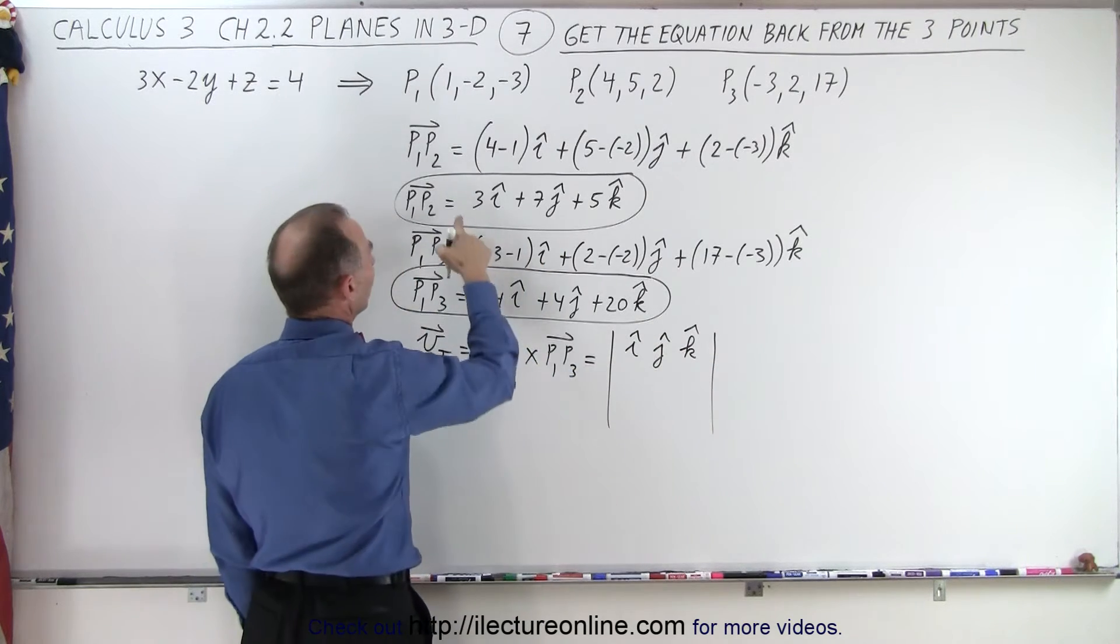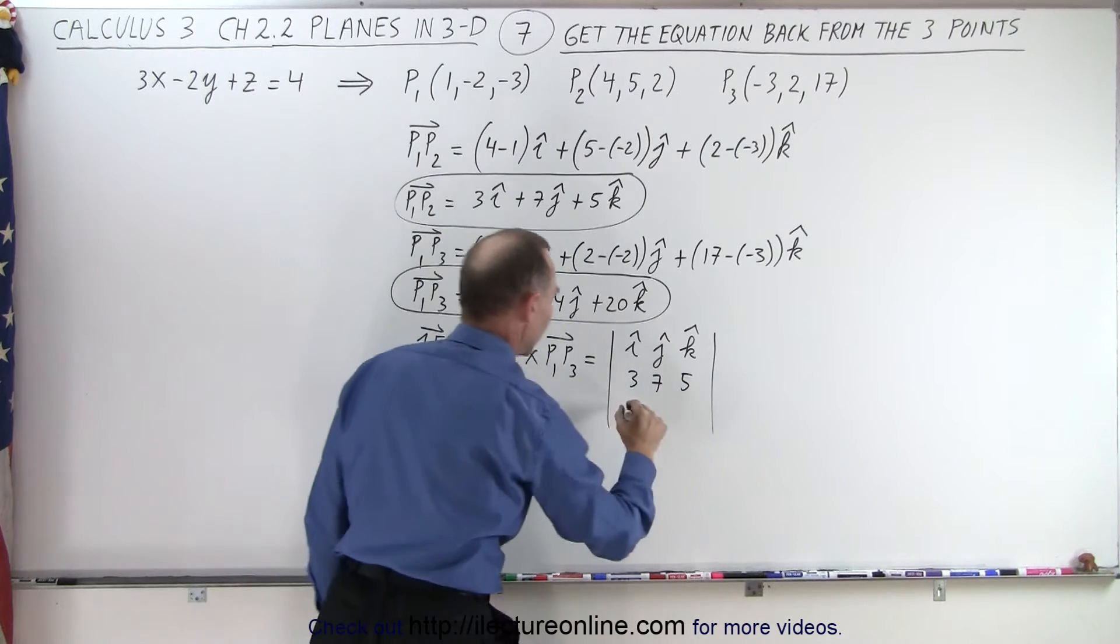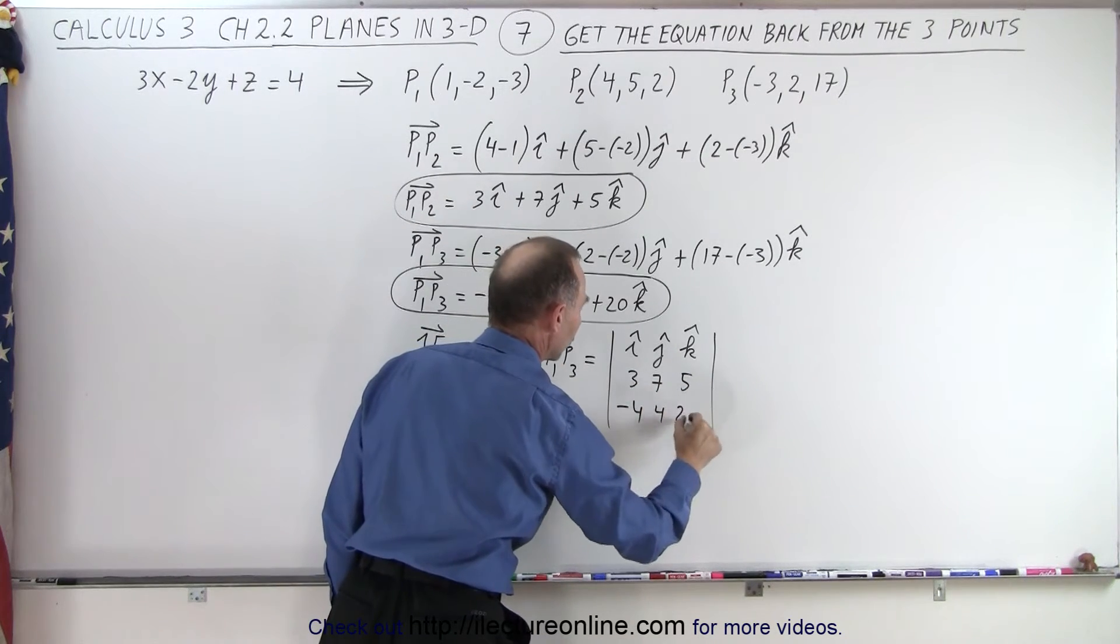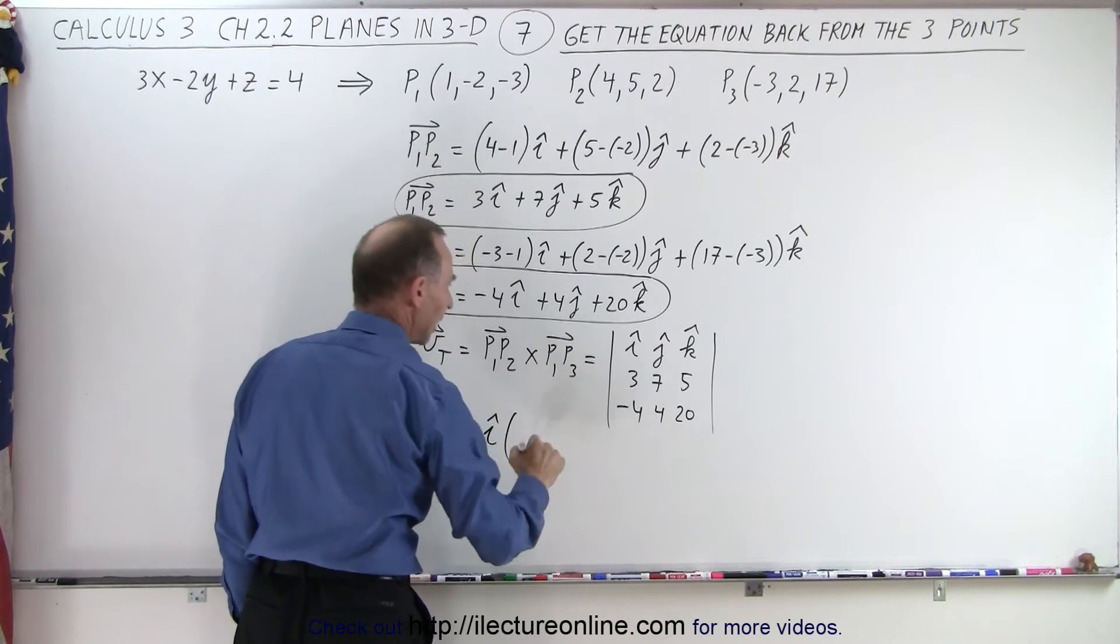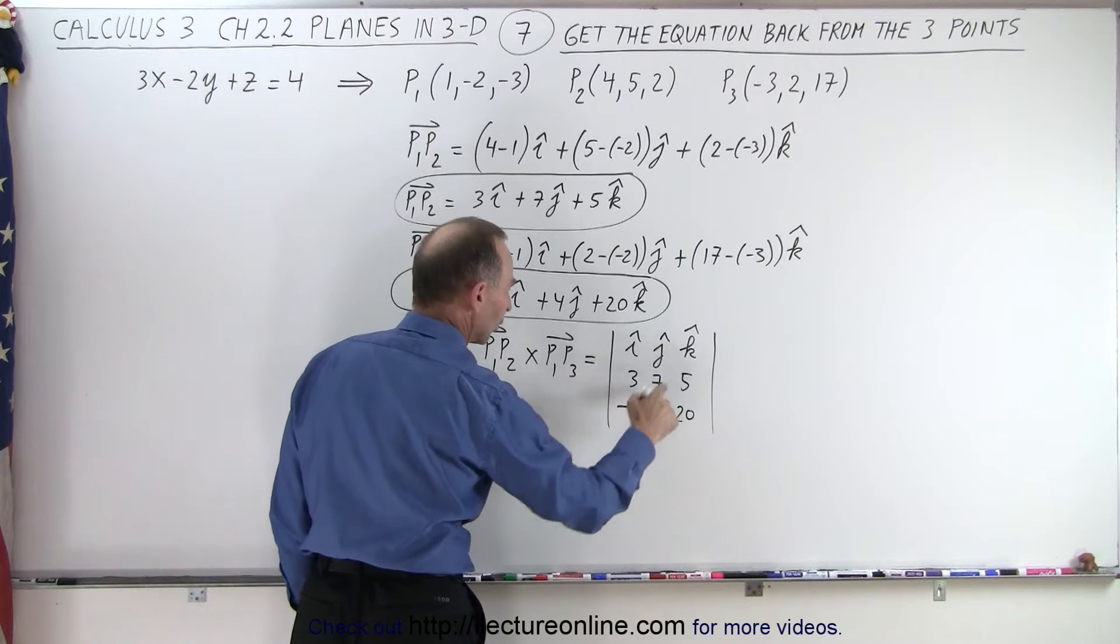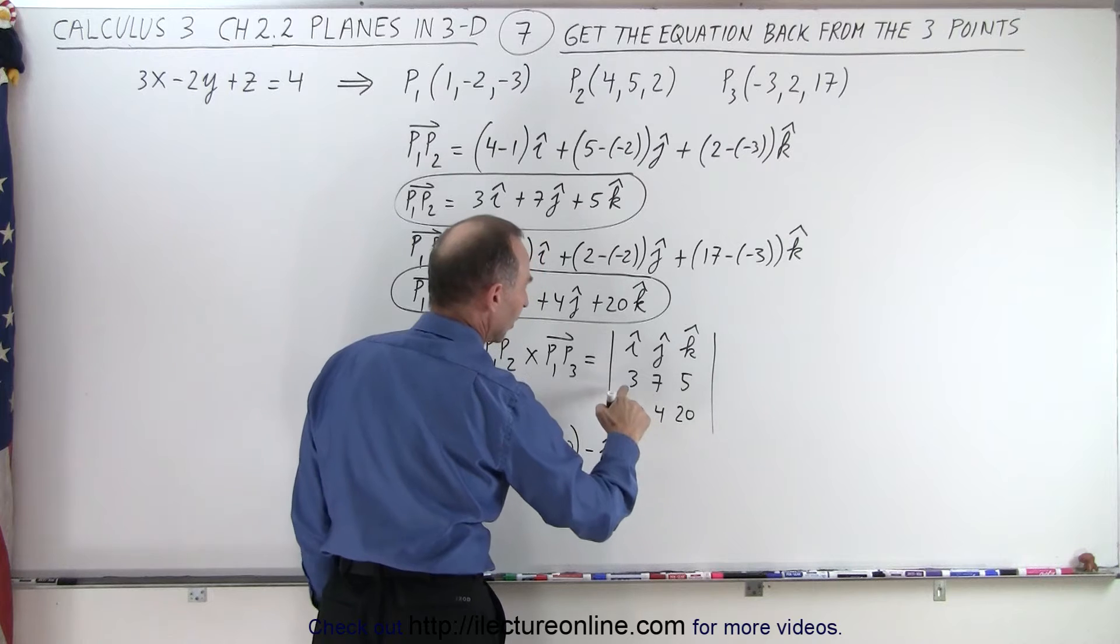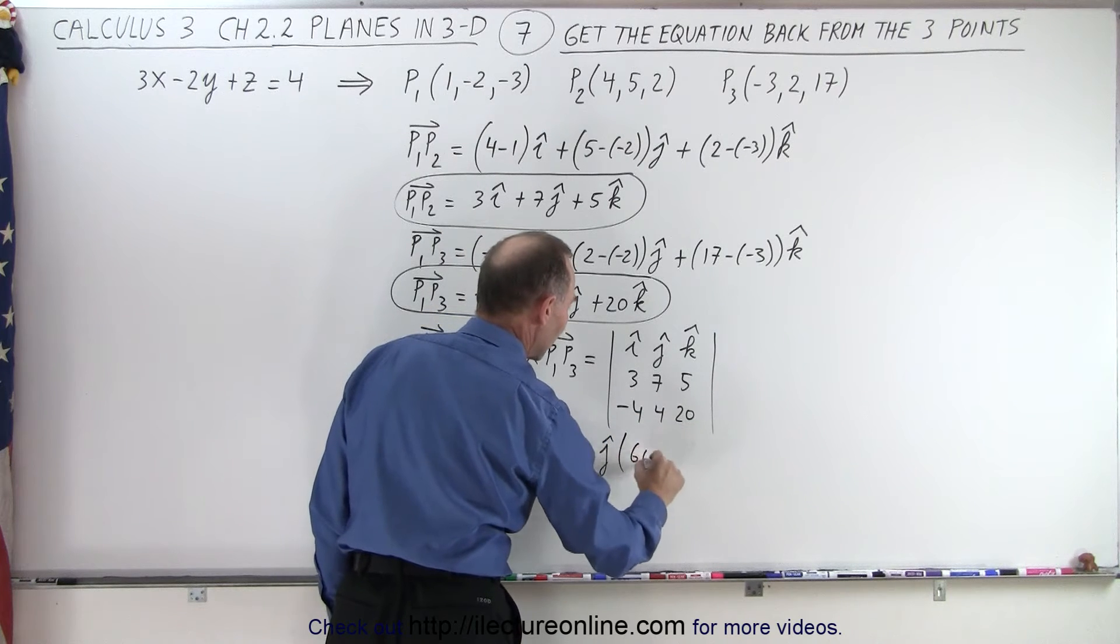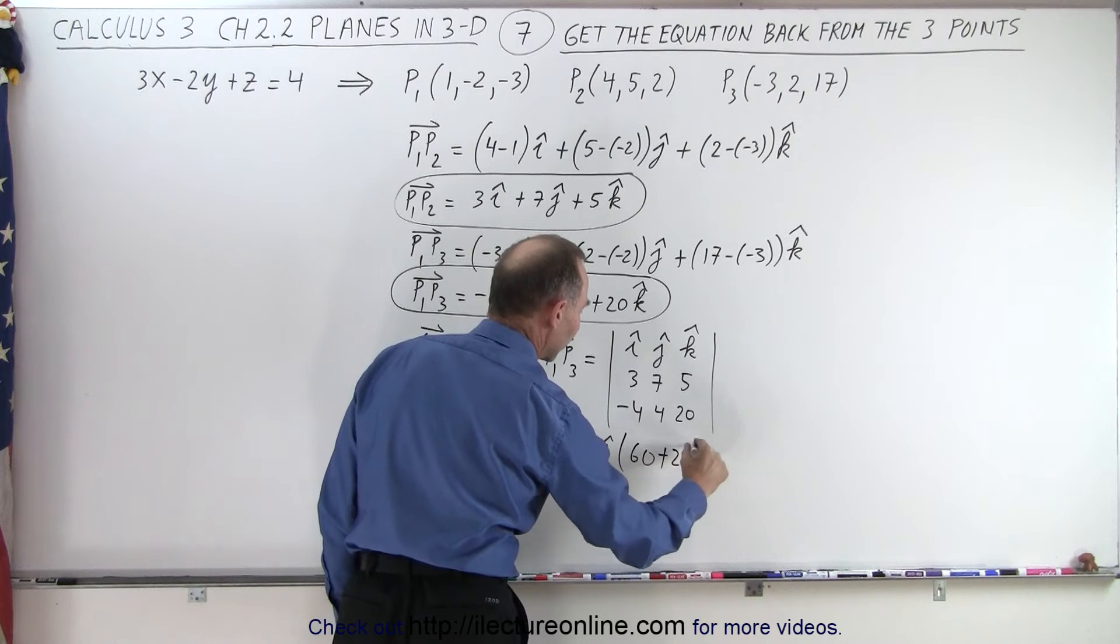the components of this vector, which is 3, 7, and 5, and the components of this vector, minus 4, 4, and 20. So that's equal to i times 7 times 20, which is 140, minus 4 times 5, which is 20, minus j times 3 times 20 is 60, minus times a minus, that would be plus 20, 4 times 5,